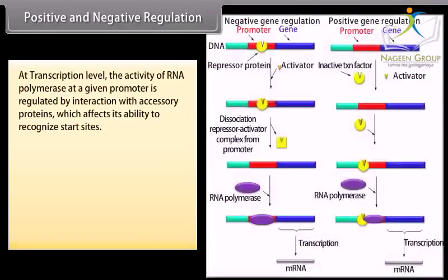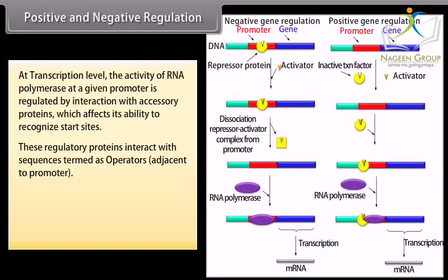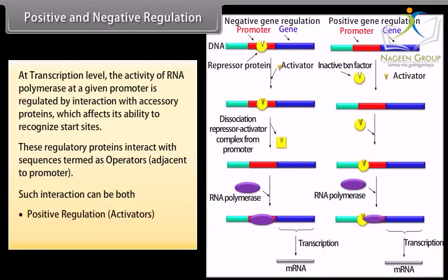At the transcription level, the activity of RNA polymerase at a given promoter is regulated by interaction with accessory proteins, which affects its ability to recognize start sites. These regulatory proteins interact with sequences termed as operators, adjacent to the promoter. Such interaction can be both positive regulation — activators — and negative regulation — repressors.